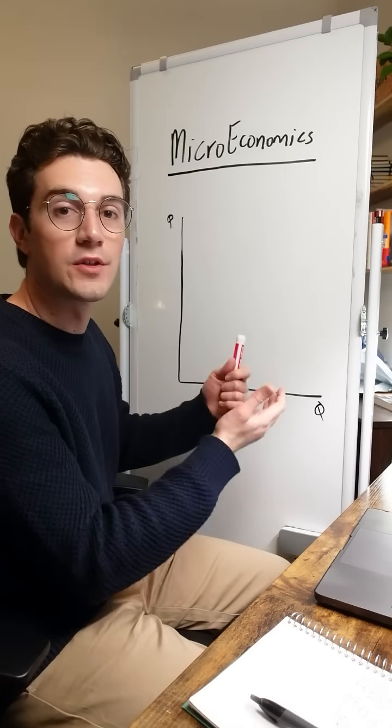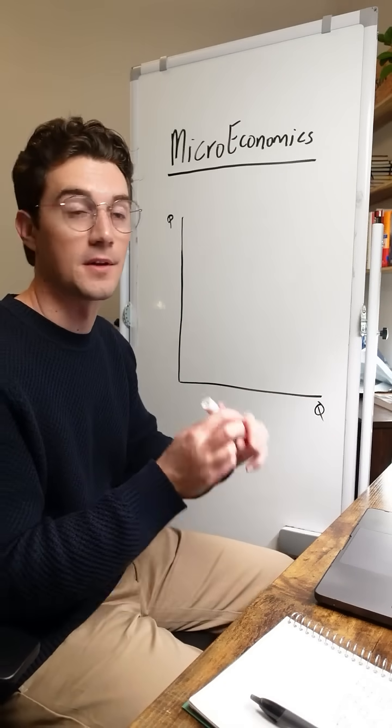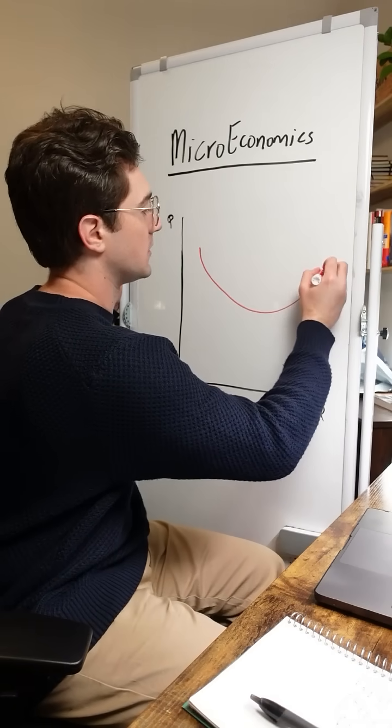Until I say so, all these curves remain constant for perfect competition versus monopoly. So for both firm types, the ATC is just going to be a downward sloping U-shape.